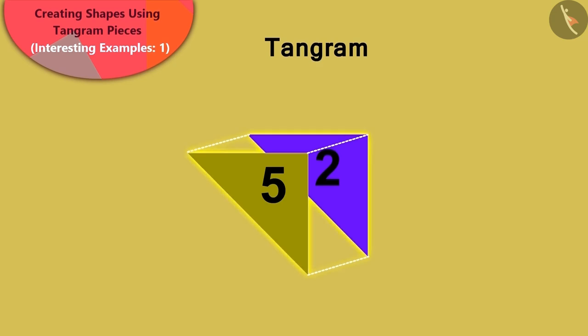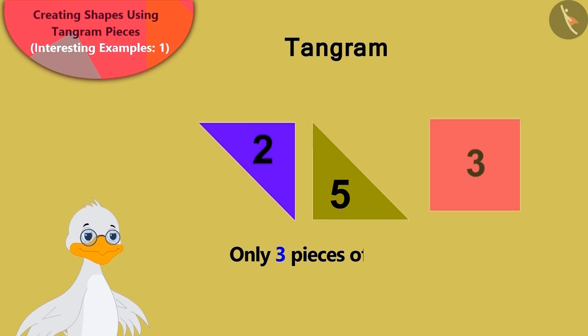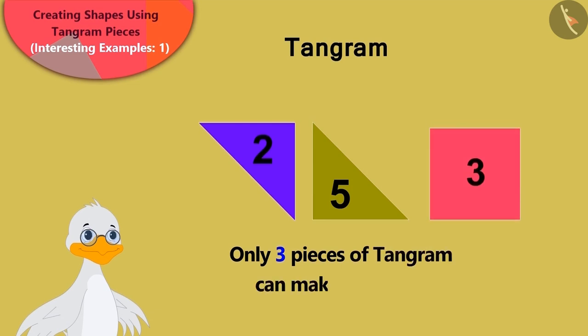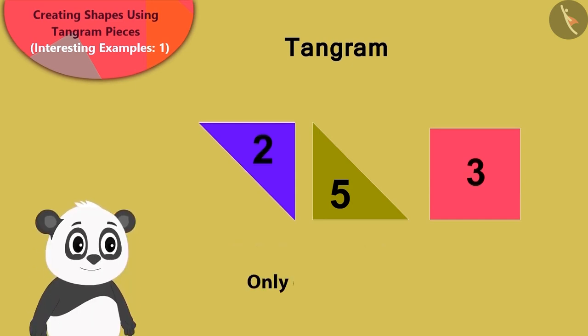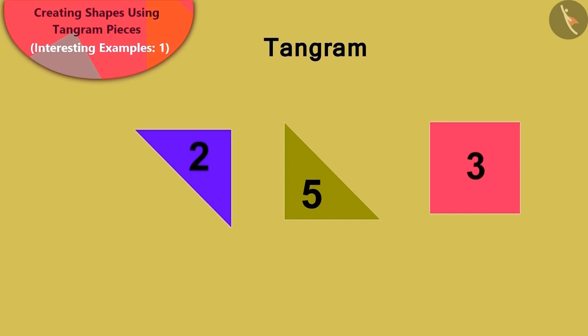Duck uncle said that he can only use three pieces of tangram to make two squares. Golu said that he can only see one square. Children, can you say how uncle made two squares?